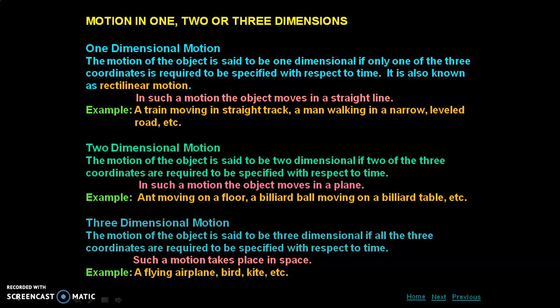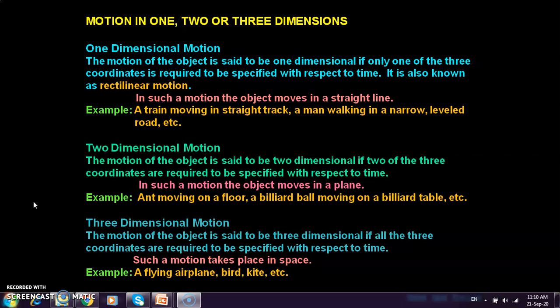The next topic is motion in 1D, 2D, and 3D. When a particle moves such that only one coordinate out of three is needed to represent its motion with respect to time, that motion is in one dimension — also called rectilinear motion or straight-line motion. Examples include a train moving on a straight track or a man walking on a narrow level road.